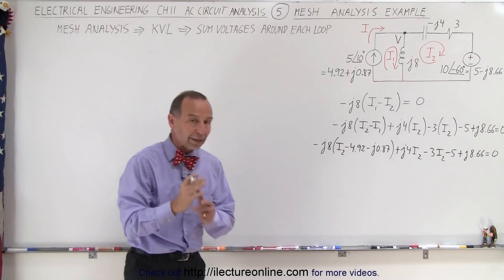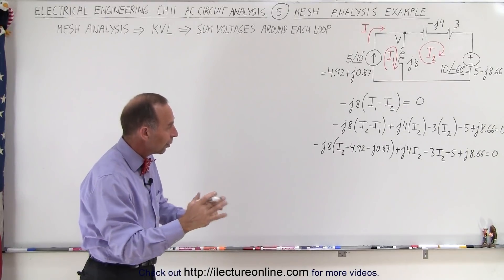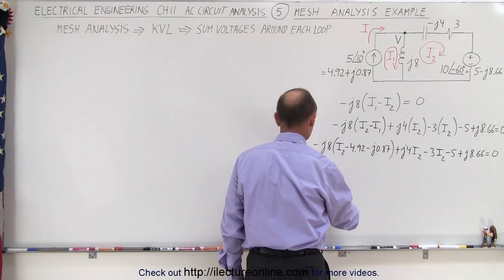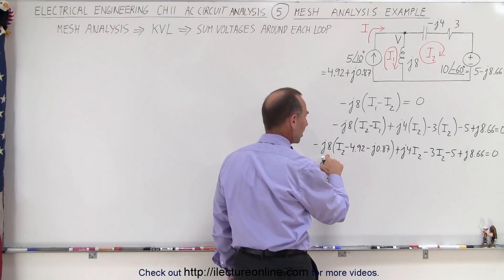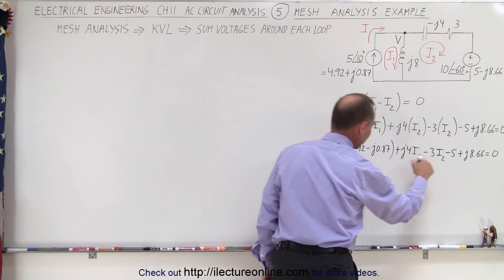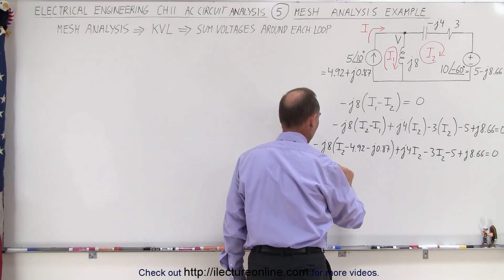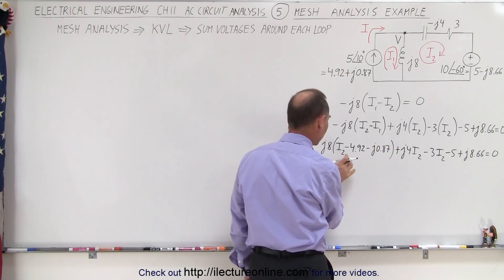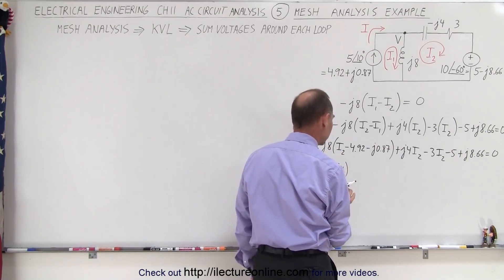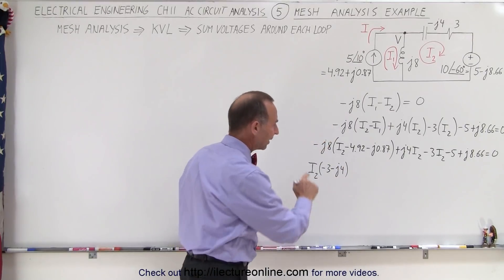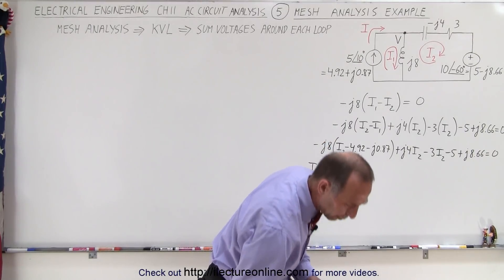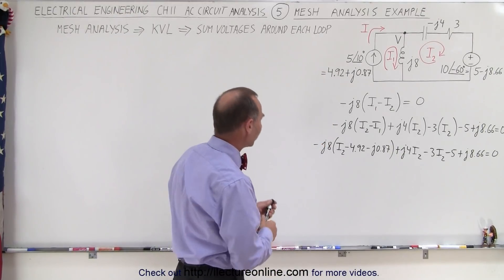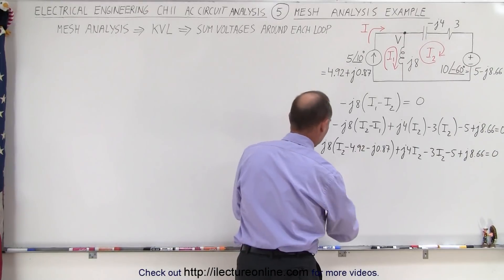So now we're going to combine all the terms with I2 and all the terms without the I2. So here we have I2 times we have a minus J8 a plus J4 and a minus 3. That gives us minus 3 minus J4 and then we have all the terms that do not have, well actually before I do that I think I want to get rid of the parentheses first. That would be a little cleaner. Let me get rid of the parentheses otherwise we may paint ourselves into a corner. So first let's get rid of that.